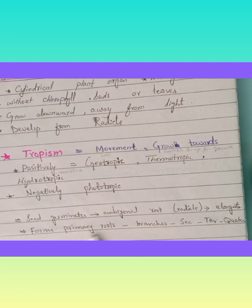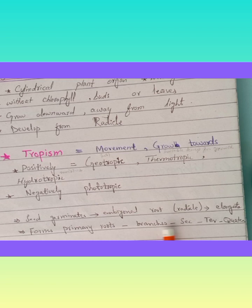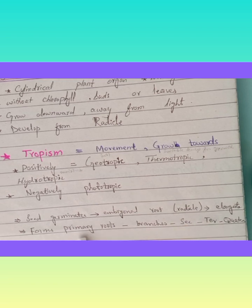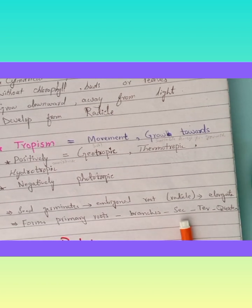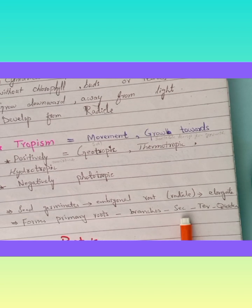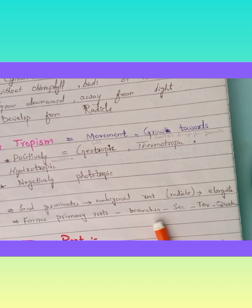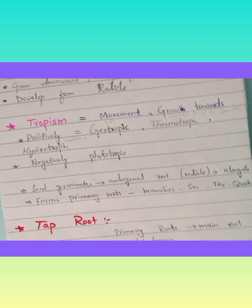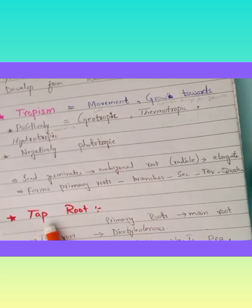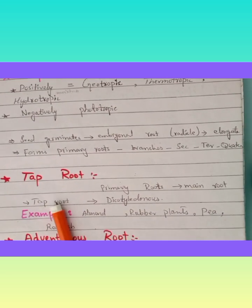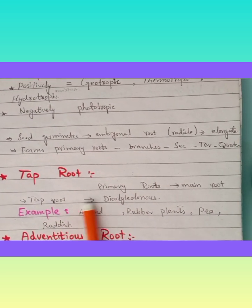When a seed germinates, it produces embryonal roots that arise from the radicle. When these roots elongate, they form the primary roots. The branches of the primary roots are known as secondary roots, while the branches of secondary roots are known as tertiary roots, and the branches of tertiary roots are known as quaternary roots.